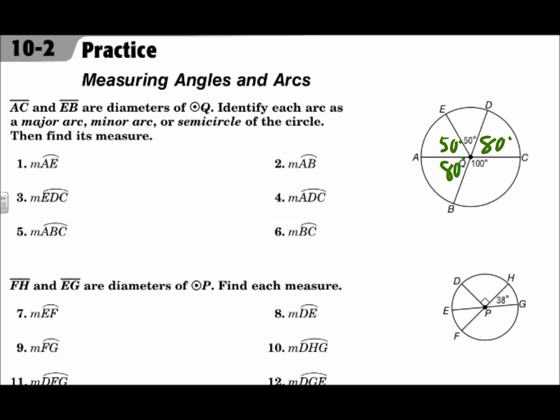Now, the arc measures are the same as the central angle measure. Angle DQC is 80 degrees, so arc DC is 80 degrees. Arc BC is 100 degrees. Arc AB is 80 degrees, the same as the central angle measure. Arc AE, 50 degrees. Arc ED, 50 degrees.